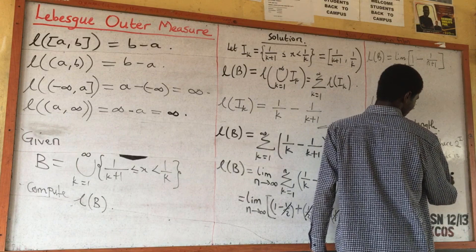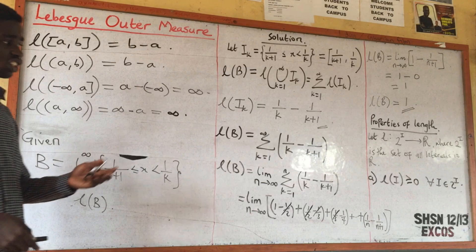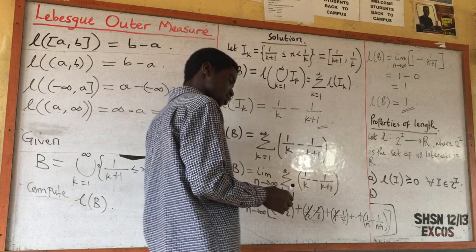The first property is that length is always greater than or equal to zero — length is non-negative. For all I belonging to the domain (the set of all intervals in R), the length is always greater than or equal to zero. I am giving these properties because they will be useful in the Lebesgue outer measure.